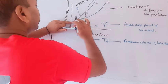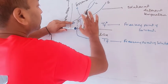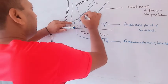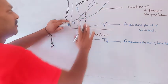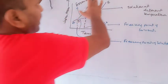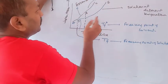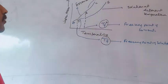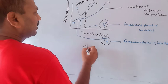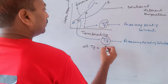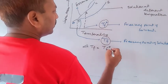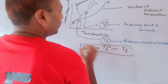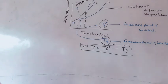So the AB curve is the vapor pressure of the solid at different temperatures, the DE curve is for the solution, and the BC curve is for the pure solvent liquid. Depression in freezing point means the difference — delta Tf is equal to the freezing point of pure solvent minus the freezing point of solution. This difference is known as depression in freezing point.